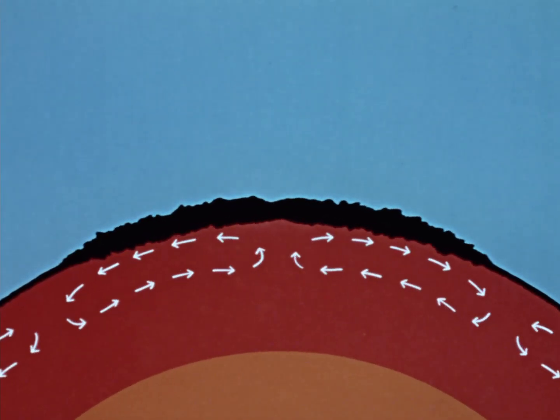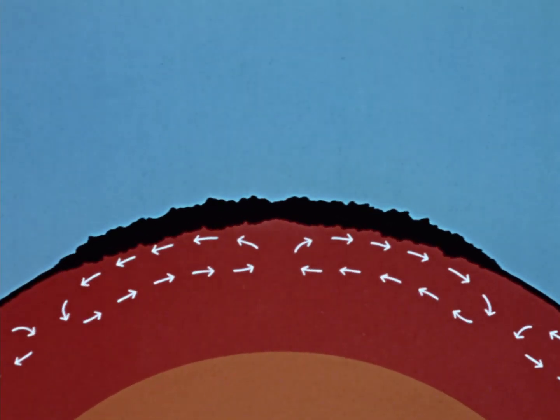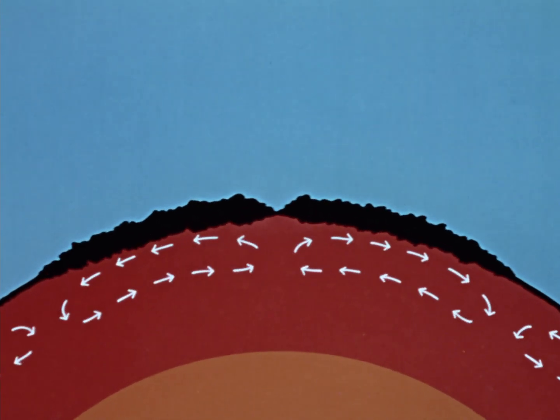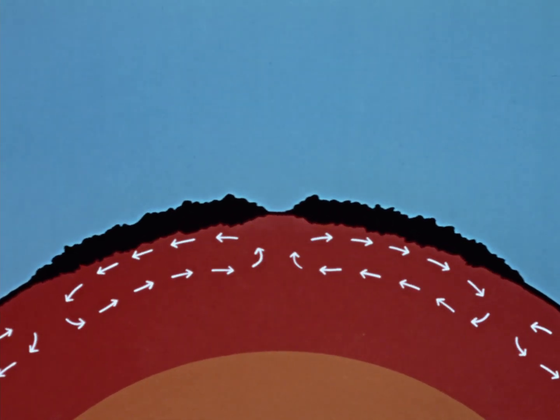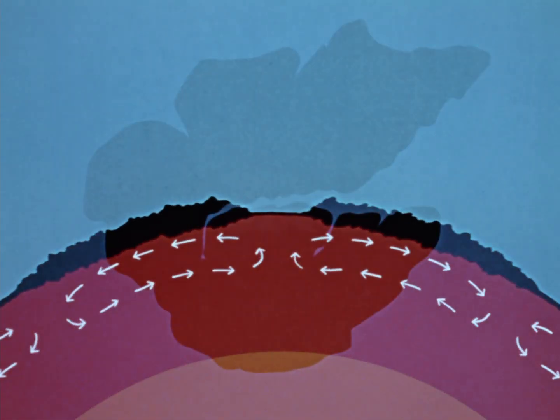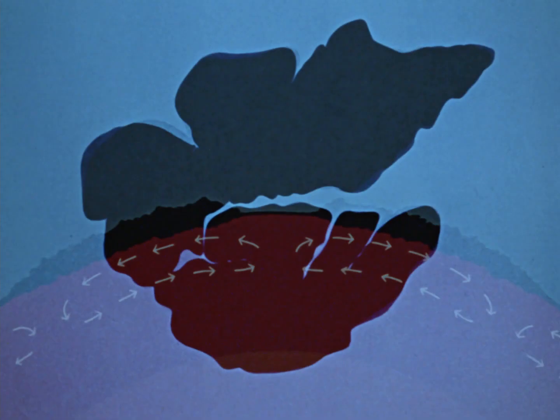Many scientists believe the Earth was once a single land mass. They suggest the pull of the currents split this mass into the continental pattern we recognize now.